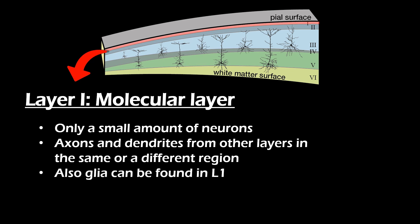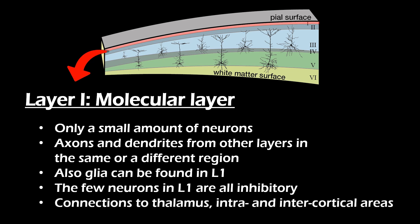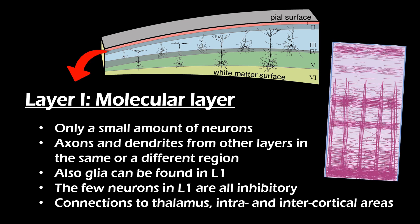The few neurons that can be found in this layer receive input from the thalamus as well as from other cortical regions. The main function of the molecular layer is to integrate cross-modal information. This input comes from horizontal fibers, which can be clearly identified in a Weigert stain.